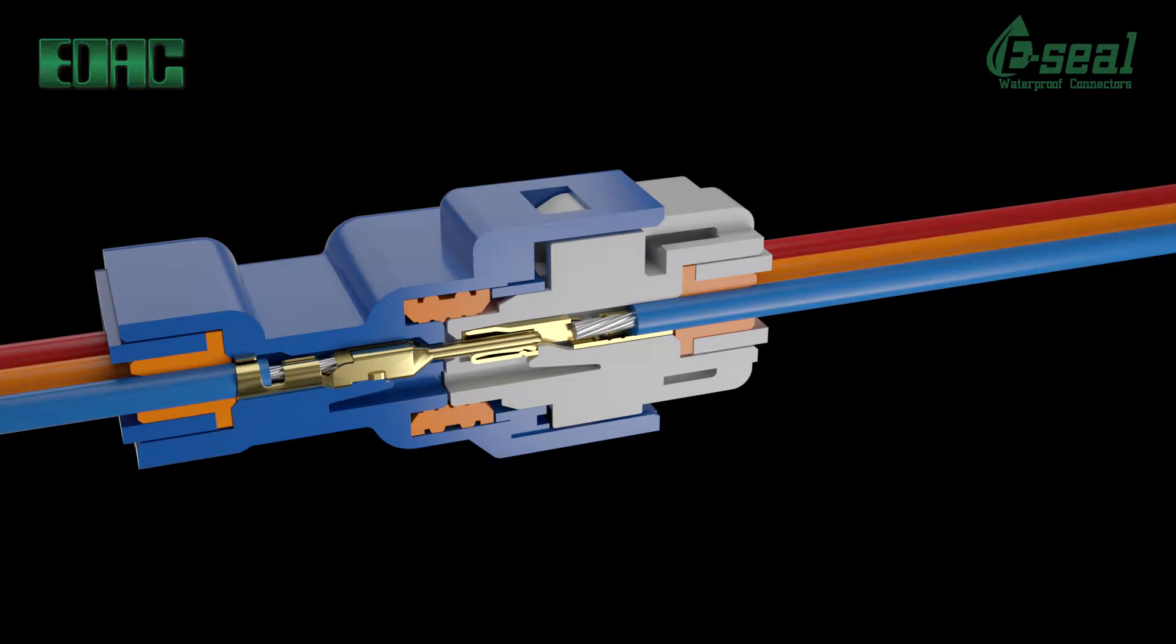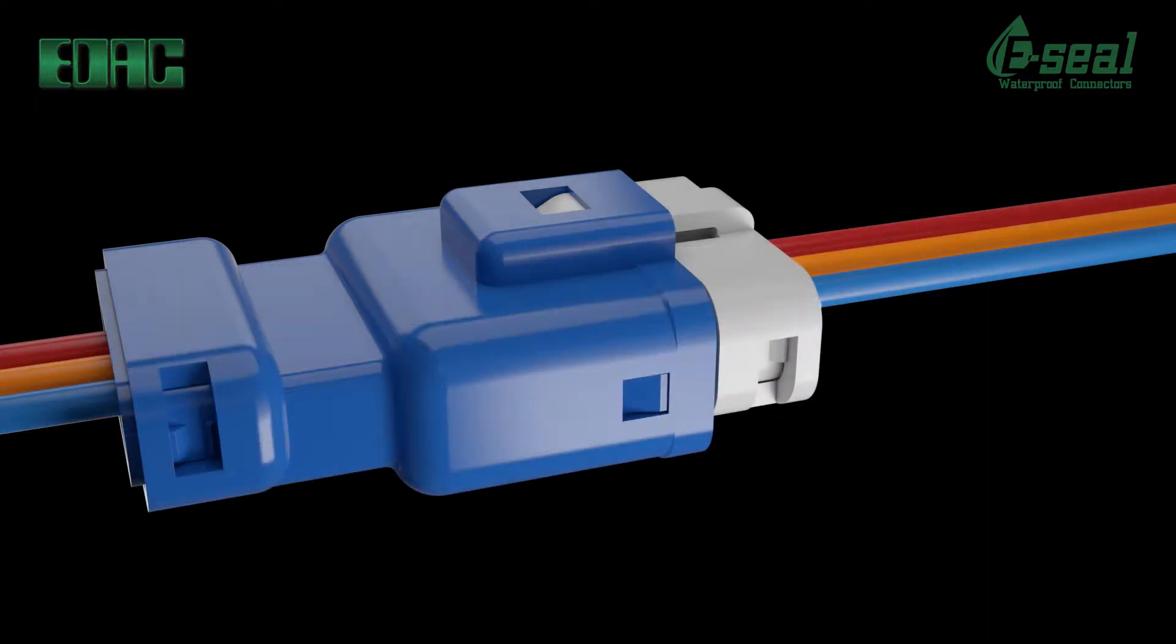Color coded seals ensure that the correct seal is used relative to wire gauge and outside diameter. In our 560 series seals are pre-assembled saving labor costs. Insulators are available in both blue or white colors.